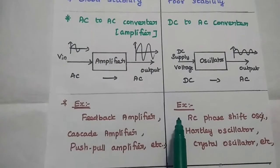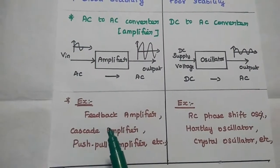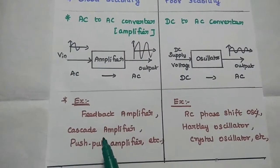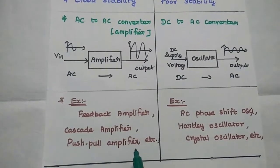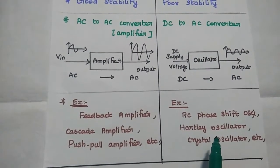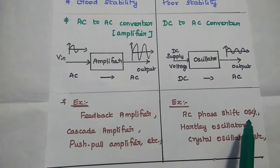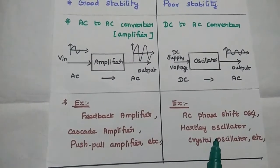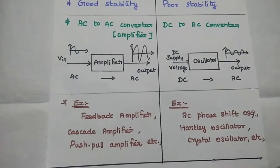Examples of amplifiers are: feedback amplifier, cascade amplifier, push-pull amplifier, etc. Examples of oscillators are: RC phase shift oscillator, Hartley oscillator, crystal oscillator, Colpitts oscillator, etc.